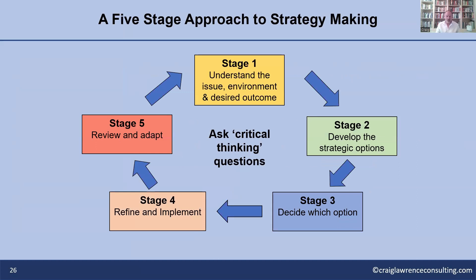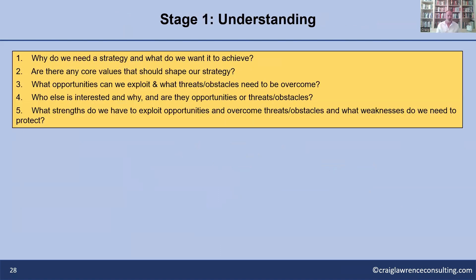So we've got our five-stage approach to strategy making, with critical thinking questions at each stage. Stage one: you've got to ask why you need a strategy — often you don't need one, sometimes you just need a plan where there isn't much uncertainty. When you've decided you do need a strategy, you need to be clear what you want it to achieve. Core values that should shape the strategy are important early on — as Peter Drucker said, culture eats strategy for breakfast. Then we get to the big one: the opportunities we can exploit and the threats and obstacles we need to overcome.